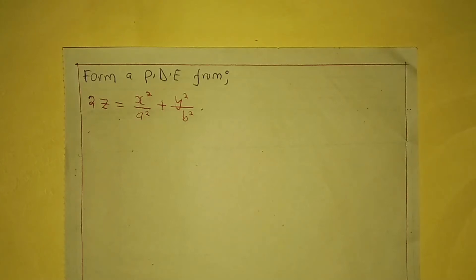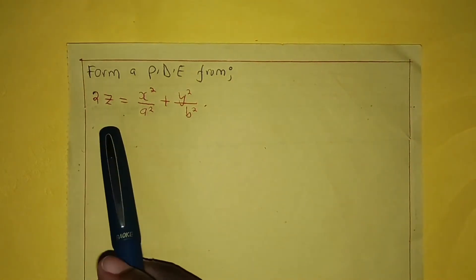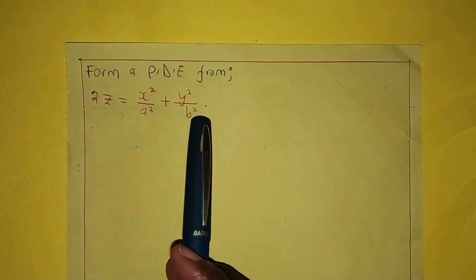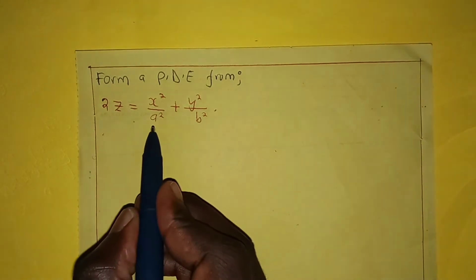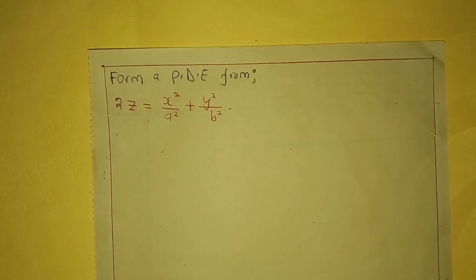Hello everyone. This is another problem involving formation of a partial differential equation. We need to form a PDE from 2z = x²/a² + y²/b². We are going to form the PDE by eliminating the arbitrary constants a and b.